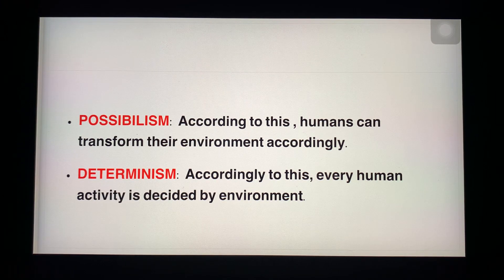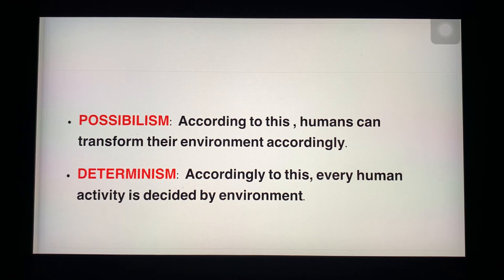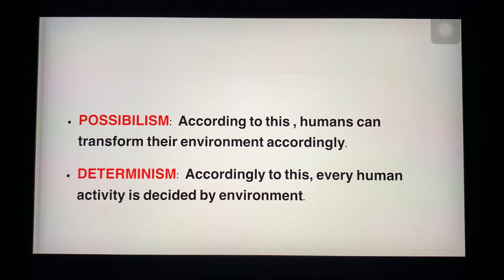The first is possibilism and the second is determinism. According to possibilism, human can transform their environment accordingly — based on their requirements, humans can change the environment. For example, if you want to build a building, we cut the trees, select an area, cut the trees there, and construct the buildings. It means we are changing the environment in our own way.